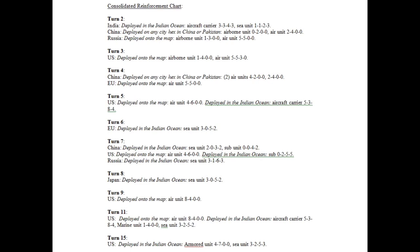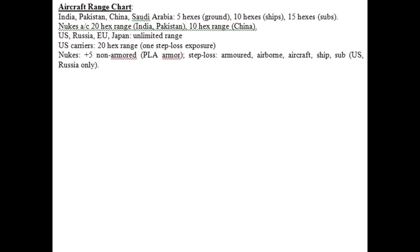The aircraft range chart is important for tracking tactical combat. Most air forces have a range of five hexes — from the city where they're based, they can fly out five hexes to hit a ground unit, ten hexes to hit ships, and fifteen hexes to hit submarines. Maritime surveillance aircraft have longer ranges. This represents different kinds of aircraft.